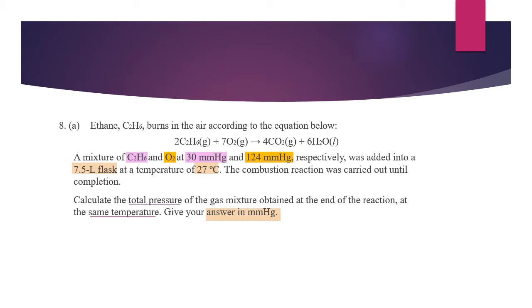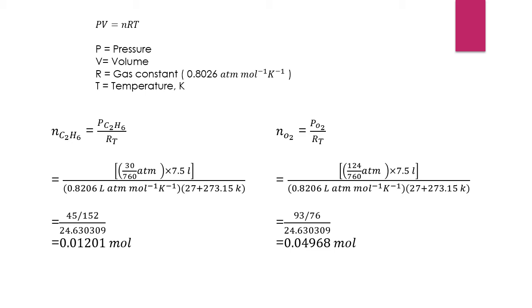So the pressure for C2H6 is 30 mmHg and for O2 is 124 mmHg. Okay, so to solve this question, we need to use the ideal gas equation PV equals nRT. First, we need to determine number of mol for C2H6 and number of mol for O2. Since the pressure given is in mmHg, we need to divide it by 760 to convert it to atm unit.